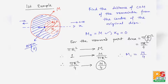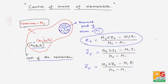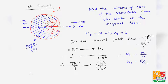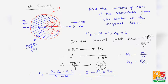The center of mass of the removed part lies at its center, so its coordinate x1 is R/2. Applying the formula: xr = (m0·x0 − m1·x1) / (m0 − m1). Substituting: x0 = 0, m1 = M/4, x1 = R/2, denominator = M − M/4 = 3M/4. This gives xr = (0 − (M/4)(R/2)) / (3M/4) = −MR/8 divided by 3M/4.